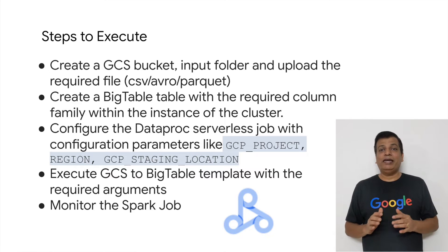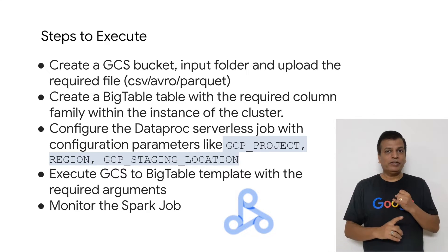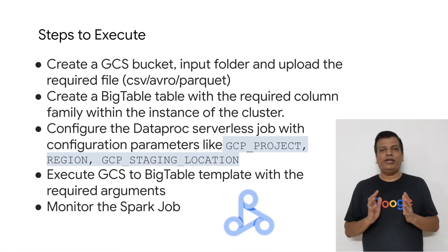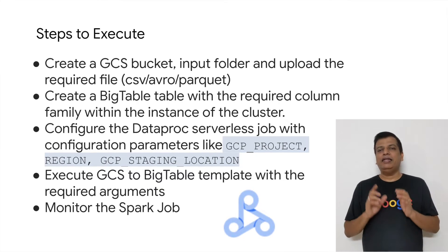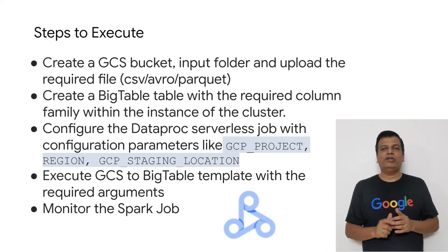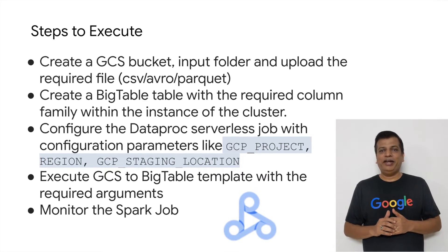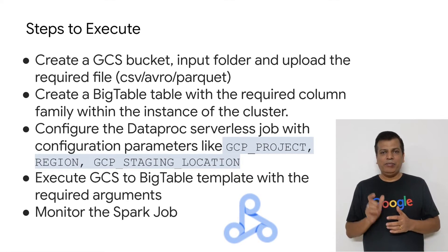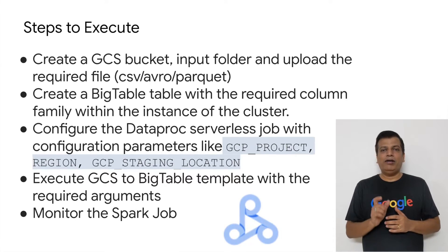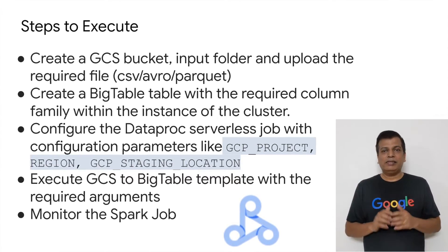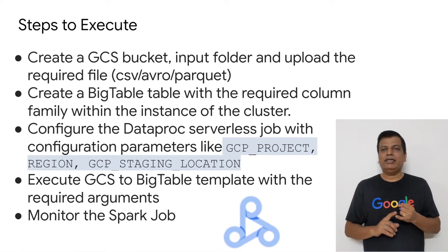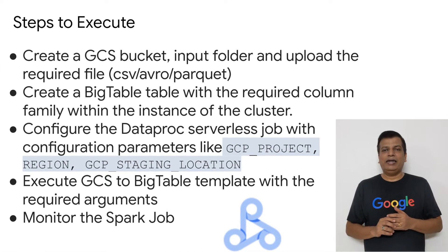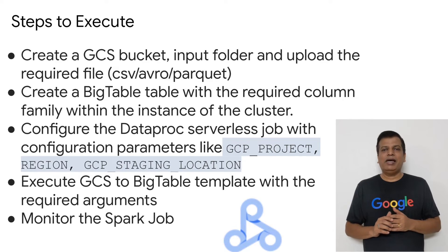In the previous video, you would have seen it's a three-step process to execute: first, clone the repository; get the authentication credentials; and execute the template. Now let's focus on the third part — how to execute the template. First, create the GCS bucket, then the input folder, and upload the required file into that folder. Next, create the Bigtable instance if it's not already available. Then, within the instance, create the Bigtable table with the required column family, which has to be passed in the arguments. Set the configuration parameters like the GCP project, region of execution, and the GCP staging location for internal use to upload the jars and temporary storage. Then pass the arguments and execute the template.